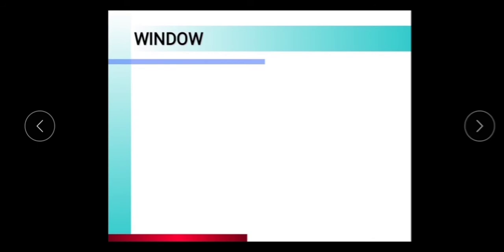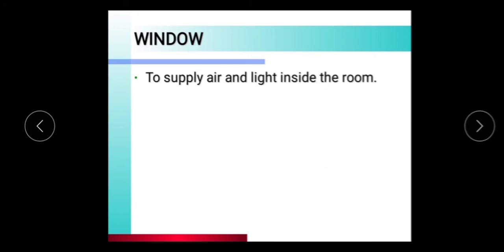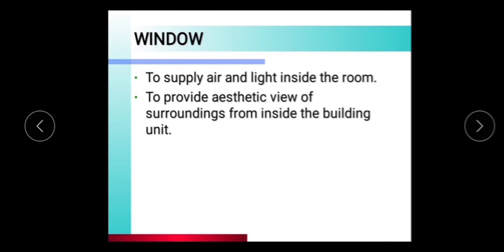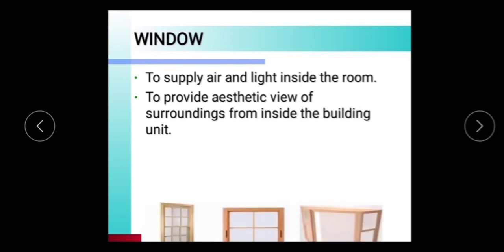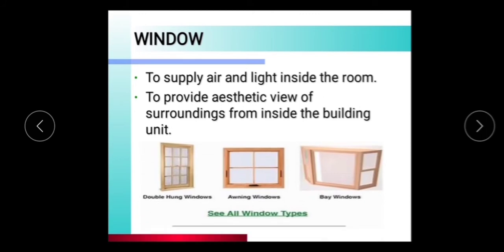We will now discuss windows. Windows are provided in a building to supply fresh air and light inside the room, and to provide an aesthetic view of the surroundings from inside the building unit. There are different types of windows available, such as bay windows and double hung windows.